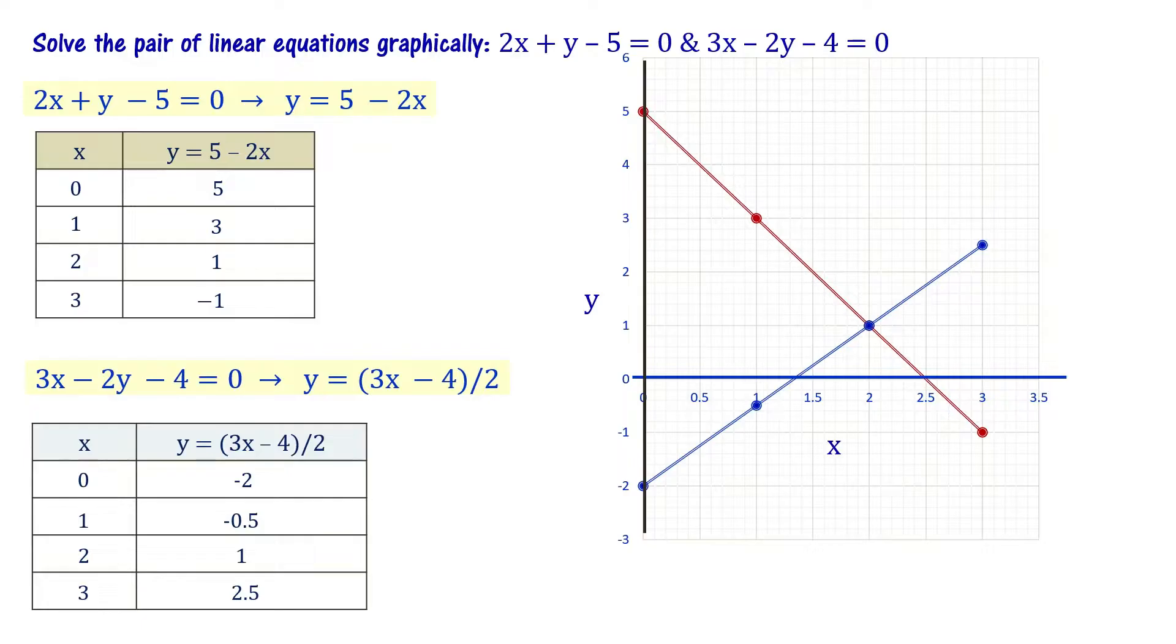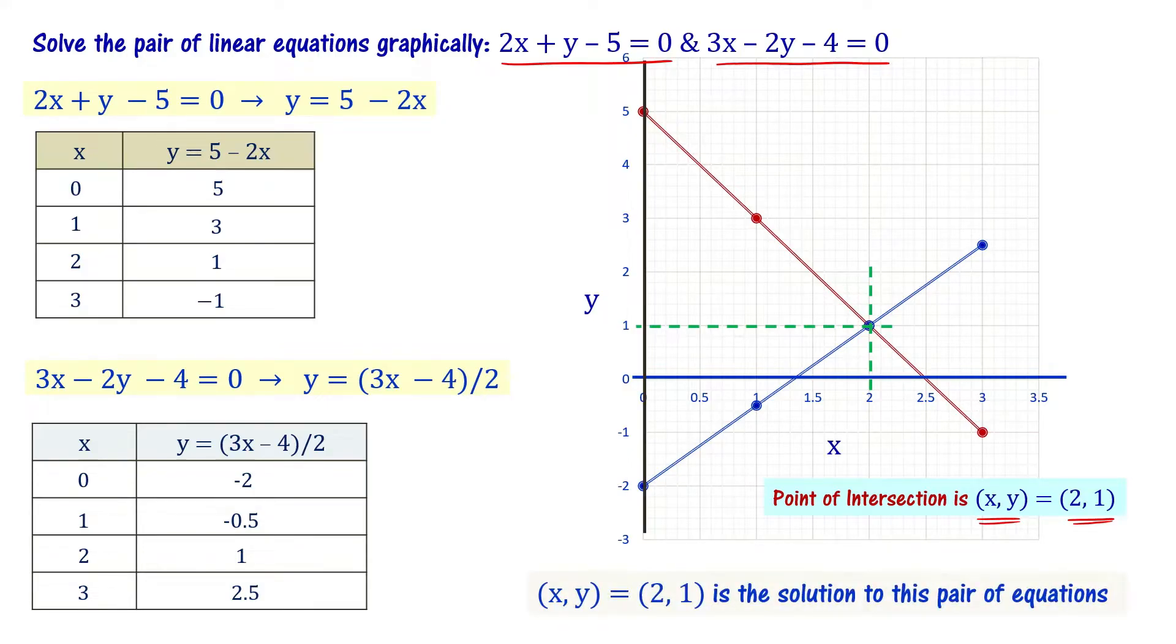Looking at this graph, the solution is where these two lines intersect. The lines intersect at y = 1 and x = 2. The point of intersection (x, y) is (2, 1). So the solution to this particular set of equations is (2, 1).